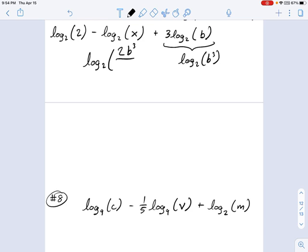So we've got 2b cubed on top, because those were both positives. And now we've got this minus log of x. See that minus sign right there? So that means x is going on the bottom. So this is what I would call the answer to this one, if they want it as a single logarithm.